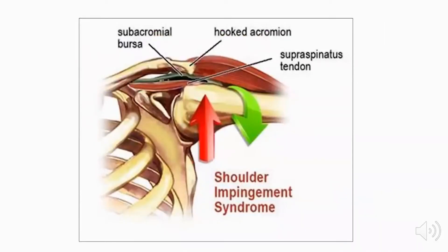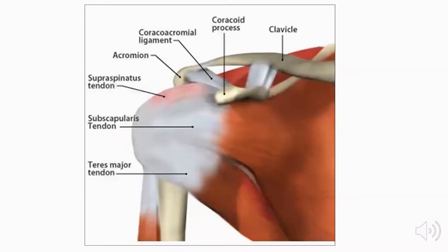This is especially common with abduction together with internal rotation, and this leads to the three basic conditions of the rotator cuff: namely subacromial impingement, rotator cuff tears, and calcific tendonitis. When the rotator cuff becomes entrapped under the coracoacromial arch, inflammation occurs in the tendon, which can progress later on to a rotator cuff tear.